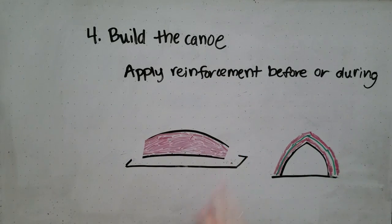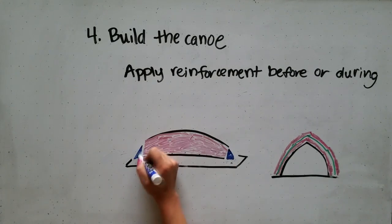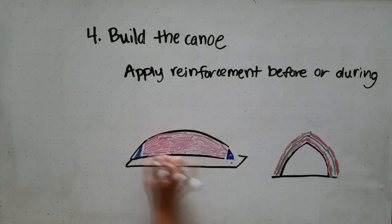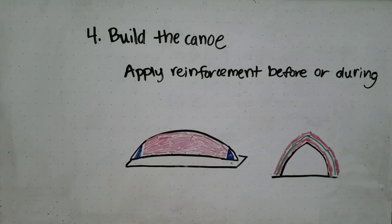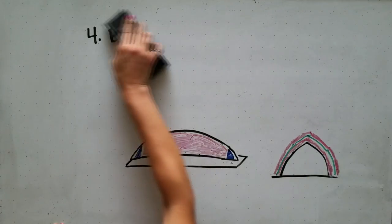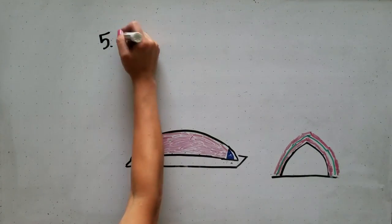If you're concerned that your canoe will not float, the best thing to do during this process is to add styrofoam in the bulkheads, which are located at the bow and the stern of the canoe. As long as they're encased in concrete, it's completely legal under the concrete canoe rules.